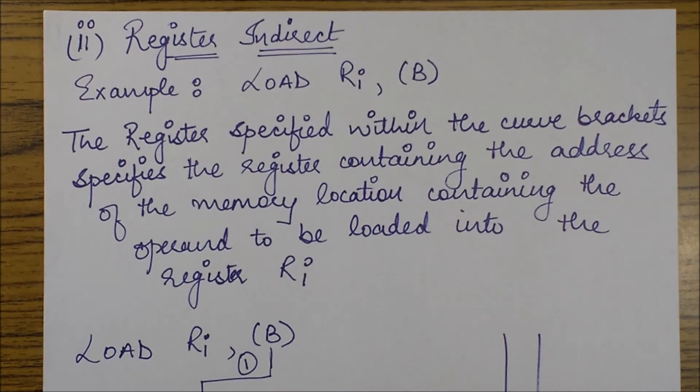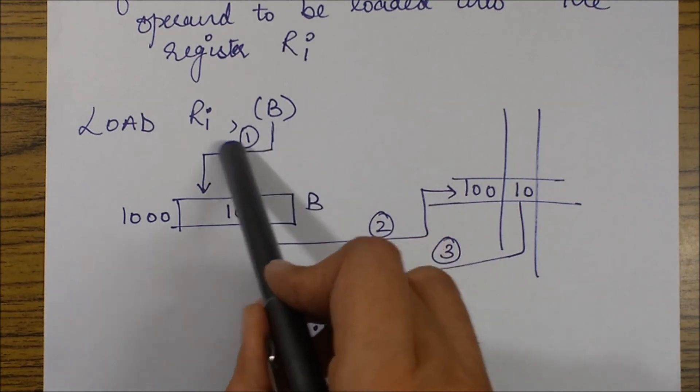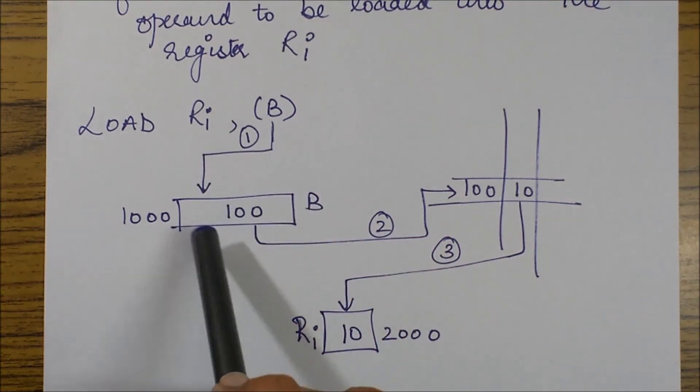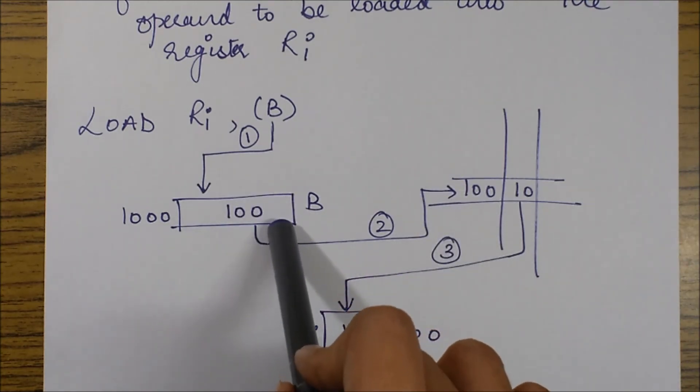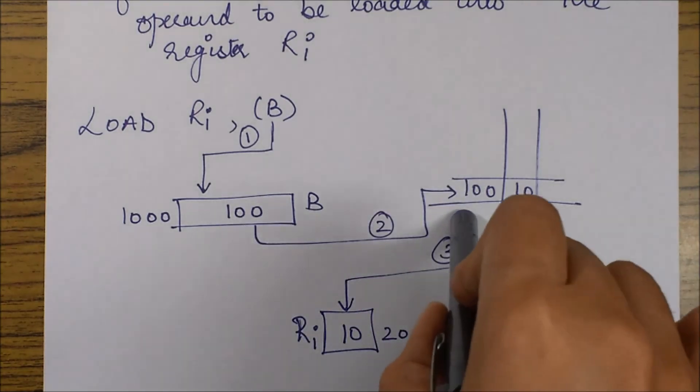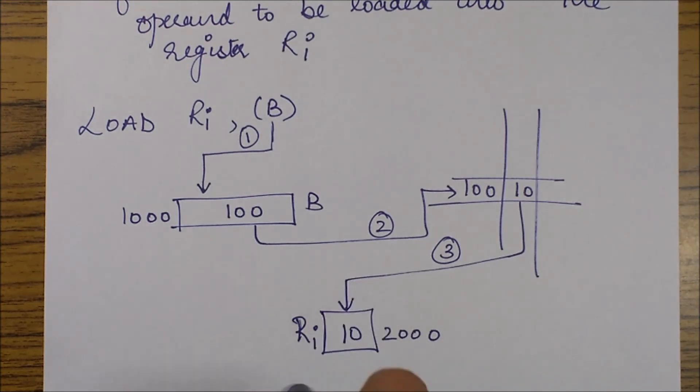So let's see how it works. So first we go to this register, register B, we fetch its contents, we move to this memory contents. These contents were actually the memory address of our operand. So we went to this memory address, fetched our operand and we stored it into register Ri. So this is how it works.